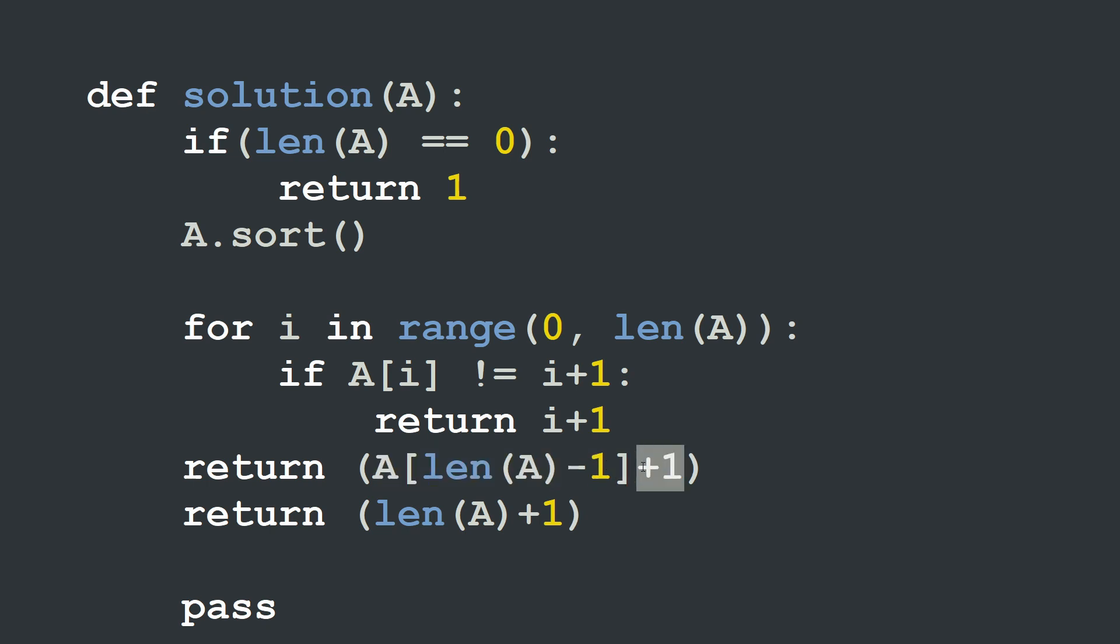Or you simply make use of the relation between the index and the values of the array itself. Since the value should be equal to the index plus 1, and in this case if the missing element is the last element or beyond the last element of the list, it should be equal to length of A plus 1.